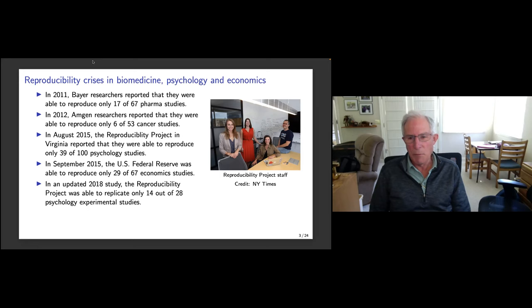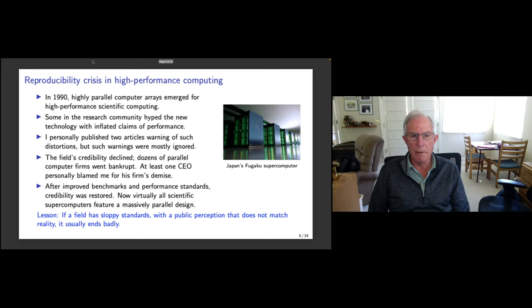Here are examples in medicine, pharmaceutical research, cancer research, psychology studies, economics. Attempts to reproduce findings in some prominent studies have been disappointing. The reproducibility project at University of Virginia has been attempting to reproduce studies in social sciences, with rather disappointing results. Only about half the time can they reproduce the main results claimed.